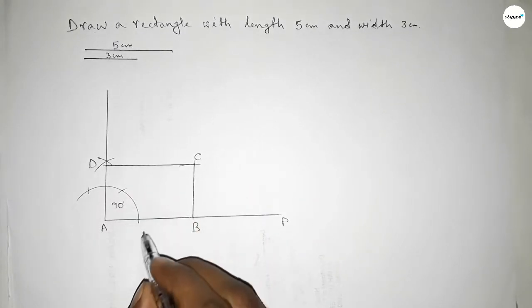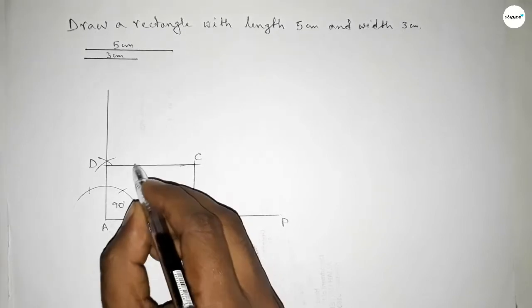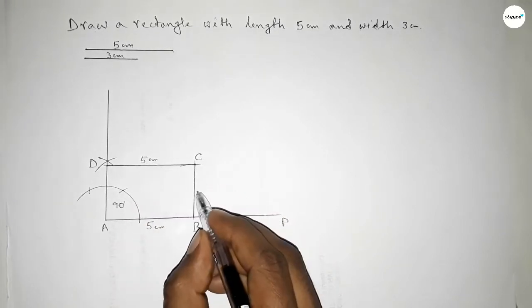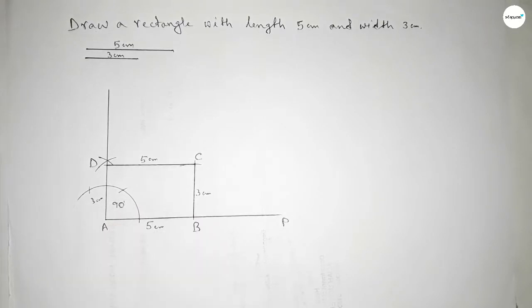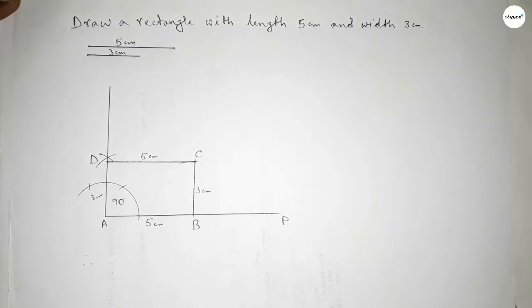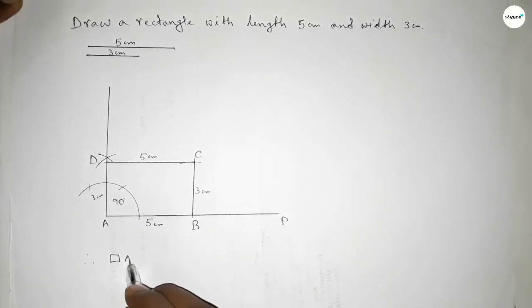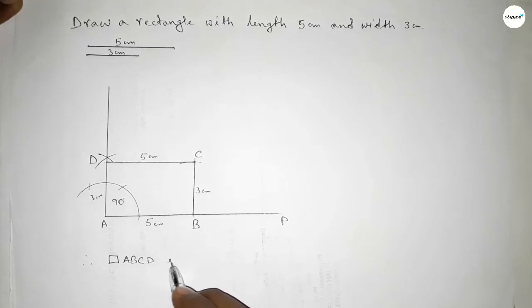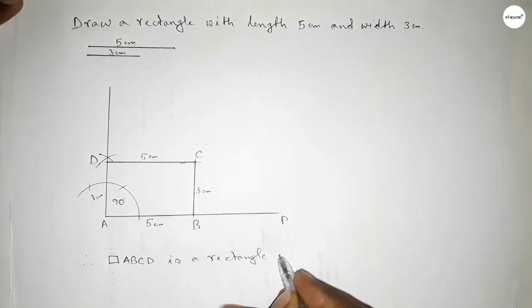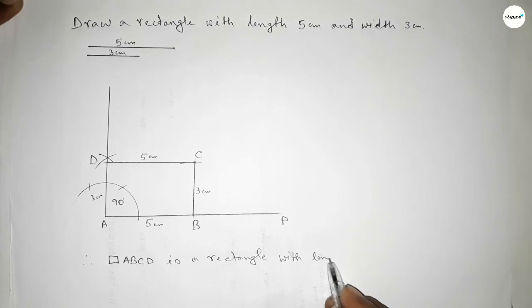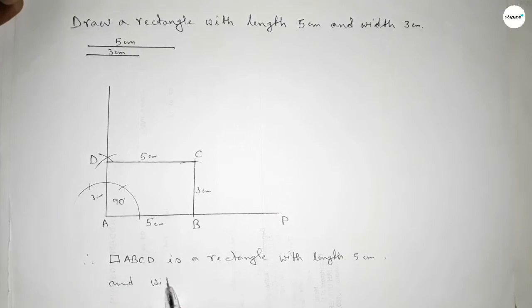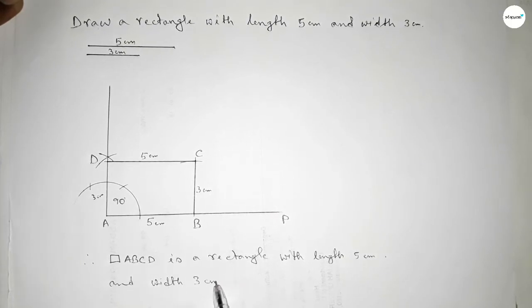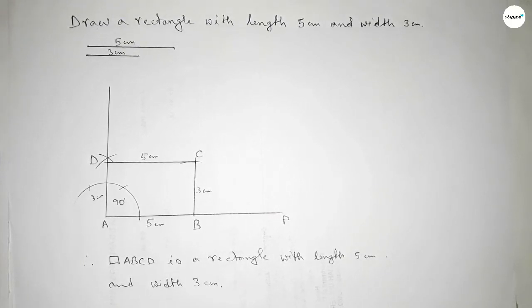AB equals 5 centimeters in length, the opposite side is also 5 centimeters, and the other two sides are 3 centimeters each. Therefore rectangle ABCD is a rectangle with length 5 centimeters and width 3 centimeters. This is the process to construct a rectangle with length 5 centimeters and width 3 centimeters. Thanks for watching, please share it.